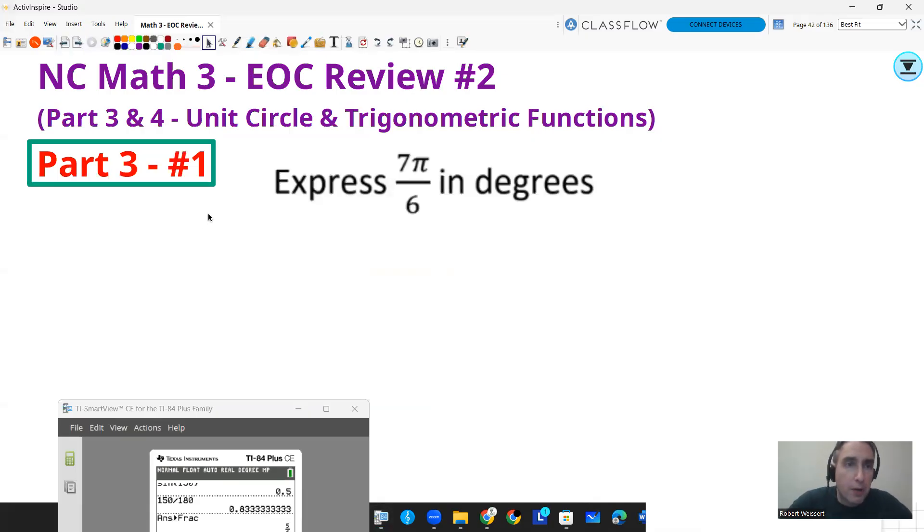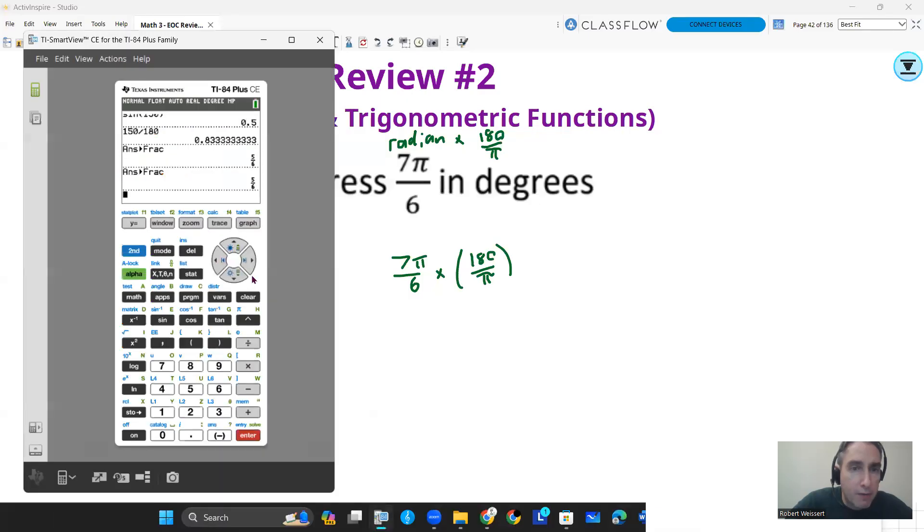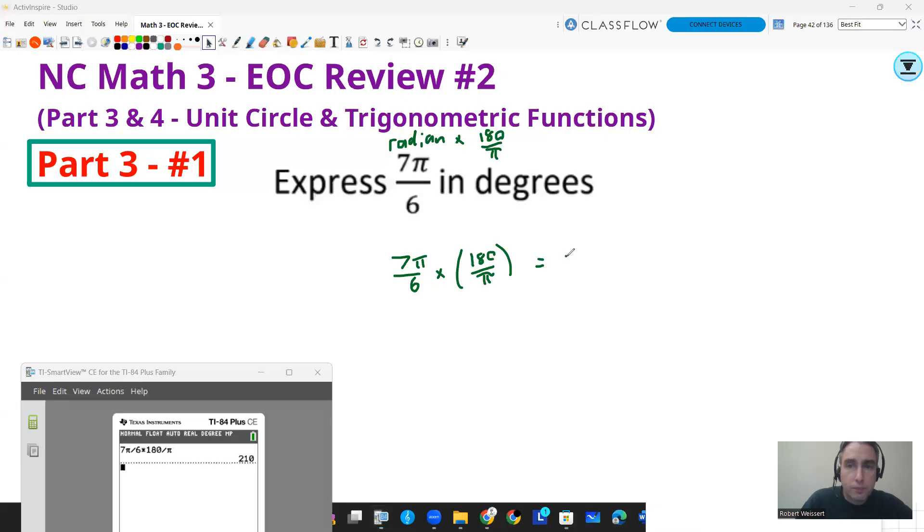So let's get into the problems. Part 3, number 1. Express 7π over 6 in degrees. So we want to take that radian and multiply it by 180 over π. So we do 7π over 6 multiplied by 180 over π. You can do that using a calculator, by hand, however you get it. I would suggest you try it first before you see my answer. So 7π divided by 6 multiplied by 180 divided by π, and that's 210 degrees. So your answer is going to be 210.